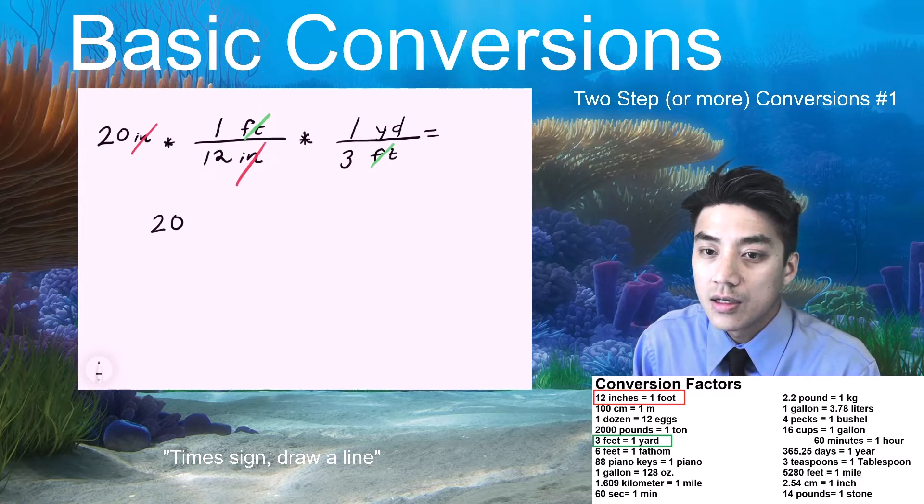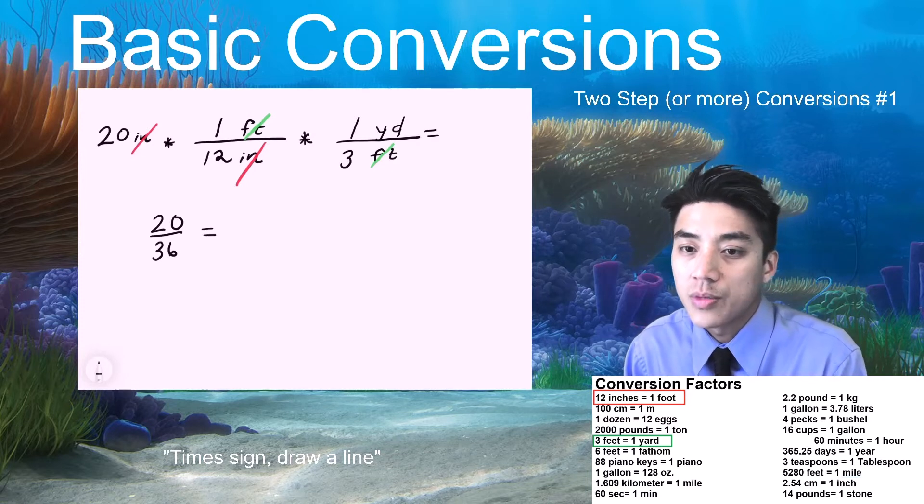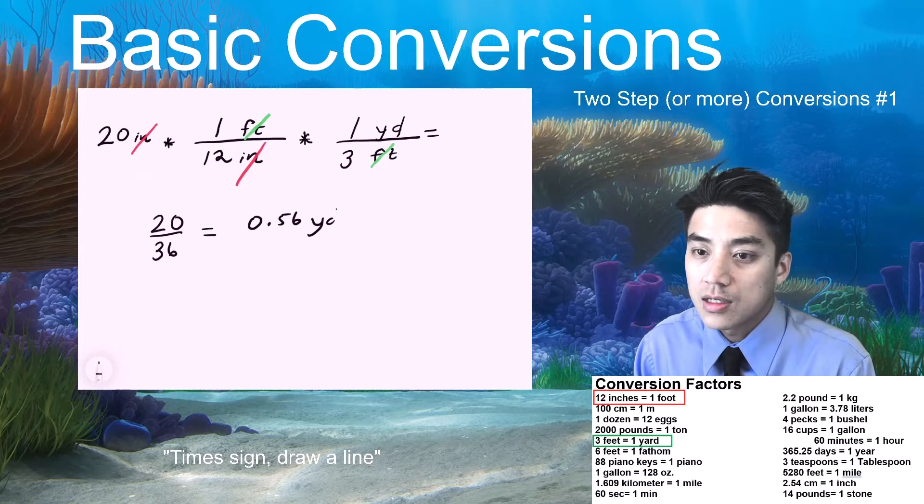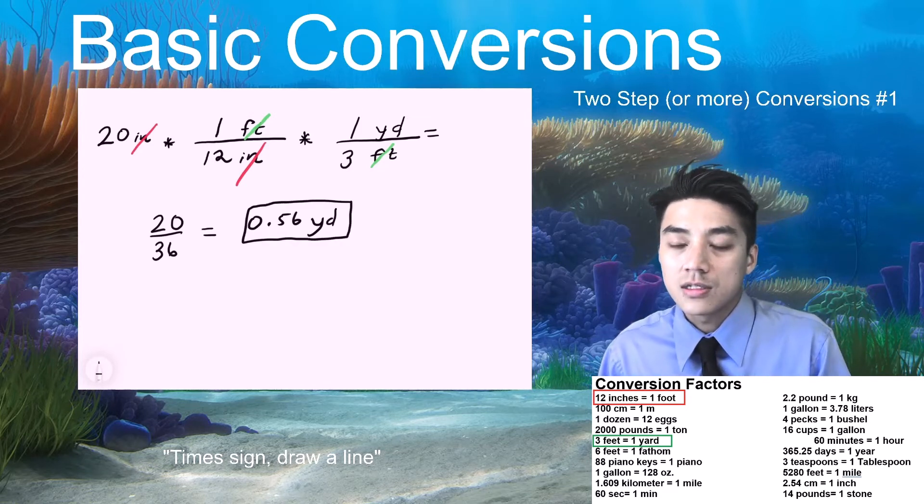And now, it becomes 20 over 36. Okay, because you have 12 times 3 on the bottom, the denominator. And 20 over 36, the answer is given as 0.56 yards. Okay, so it took us 2 steps. You had to set up 2 conversion factors to get to your answer.